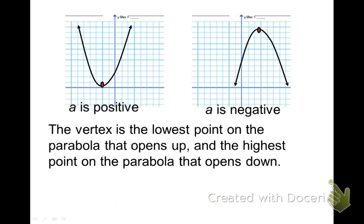The vertex is either the lowest point or the highest point in the graph. This is the lowest point on the graph. That would be called a minimum. And this is the highest point on the graph. It would be called a maximum over on the right.